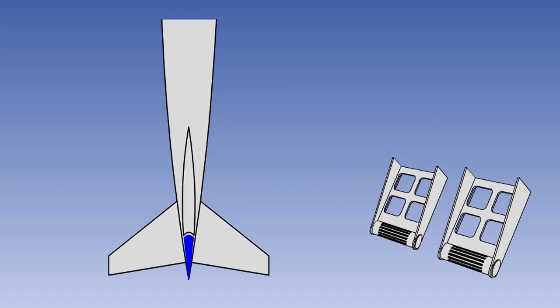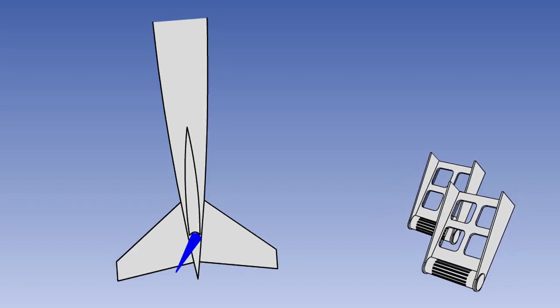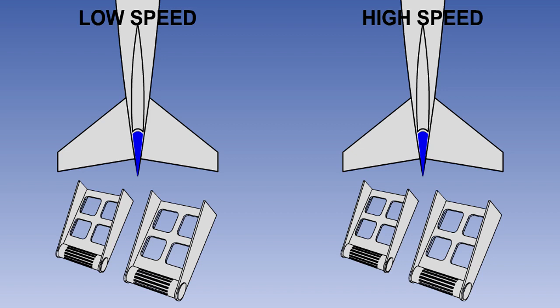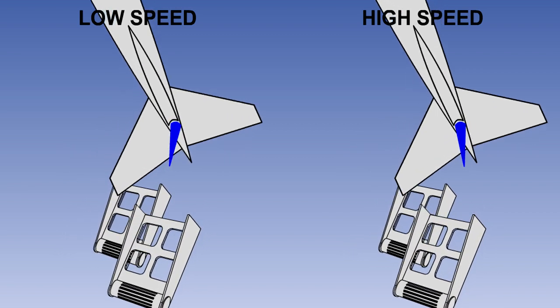That is the end of the lesson. You now know that control in yaw is achieved using the rudder. Also remember that modern airliners have some type of rudder ratio change mechanism to reduce the amount of rudder travel at high aircraft speed.